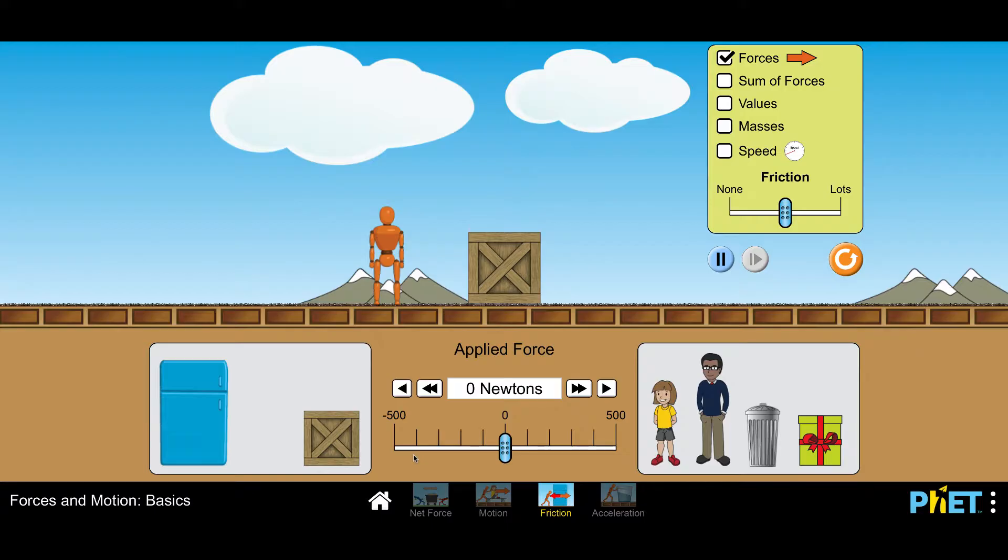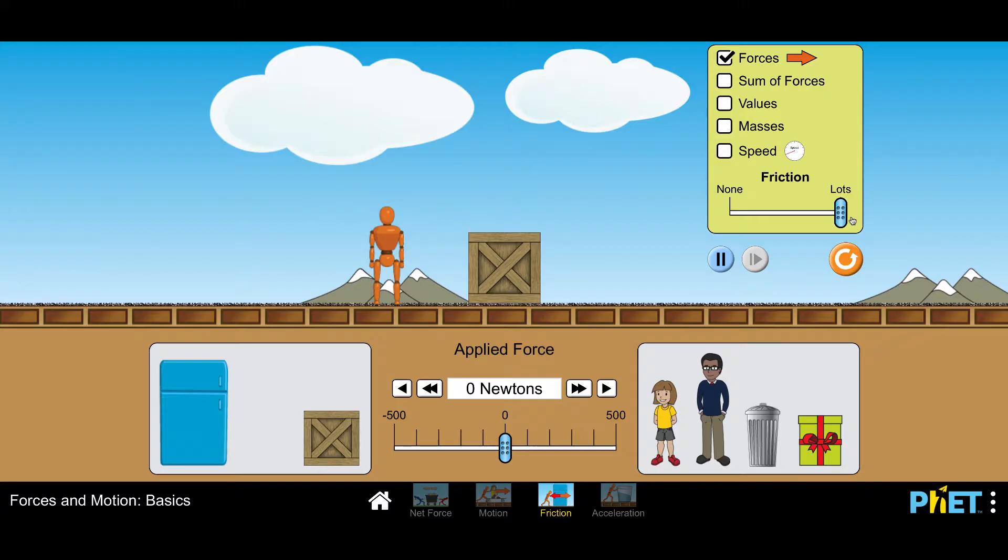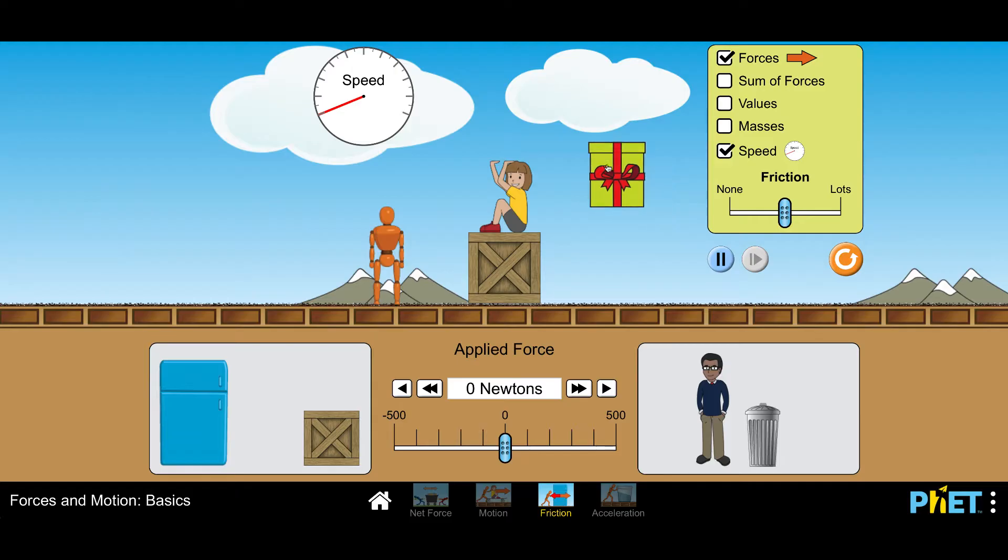All right, so now we're in the PhET game, forces and motion basics. And we're on the third game, friction. So here we have our box and it's on solid ground that has friction. So here we have a friction bar where we could say no friction, so it's ice, or a lot of friction. You can kind of see where the sand is added to the surface there. So we're going to keep it about right in the middle for now just to practice. I'm going to make sure I get my speedometer out and I'm going to try to push this heavy box. I'm going to add some weight to it. And let's see, I'm going to add this girl here and let's give her a present.